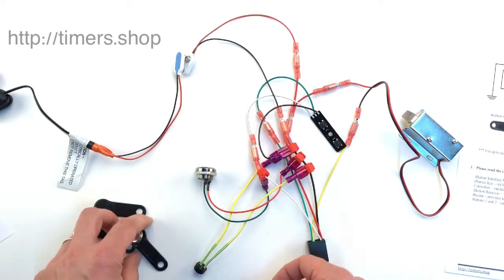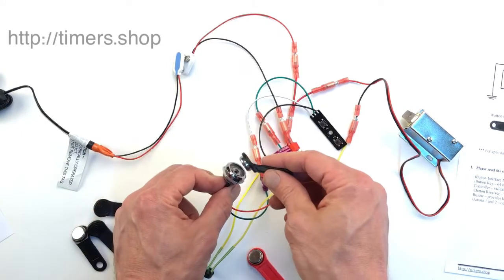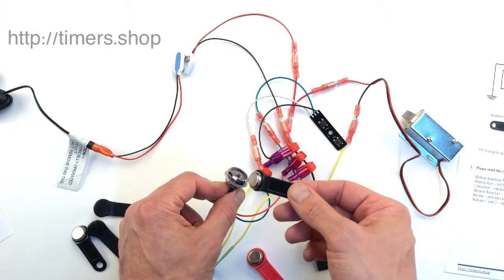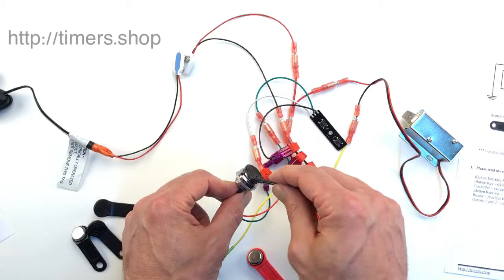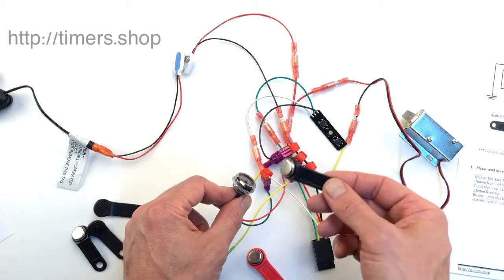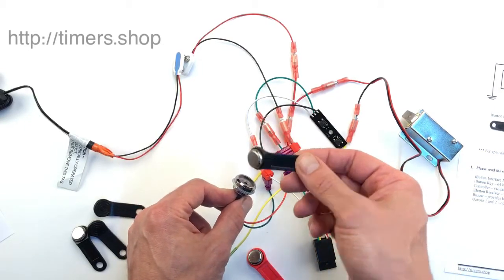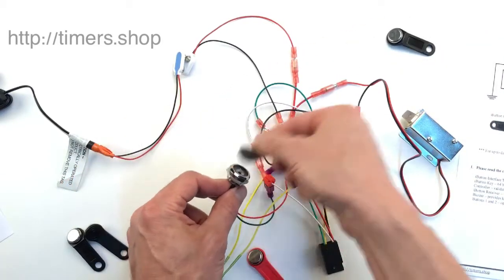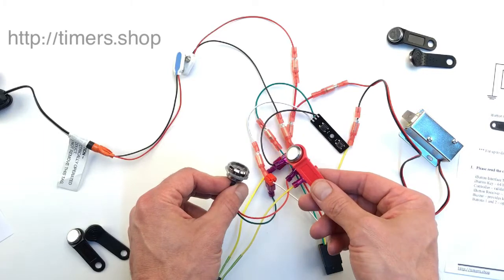Touch the black key – it beeps once, meaning it's added to the lock. Touch it again, and it beeps twice, meaning it's removed from the lock. Touch it again to add the key back.